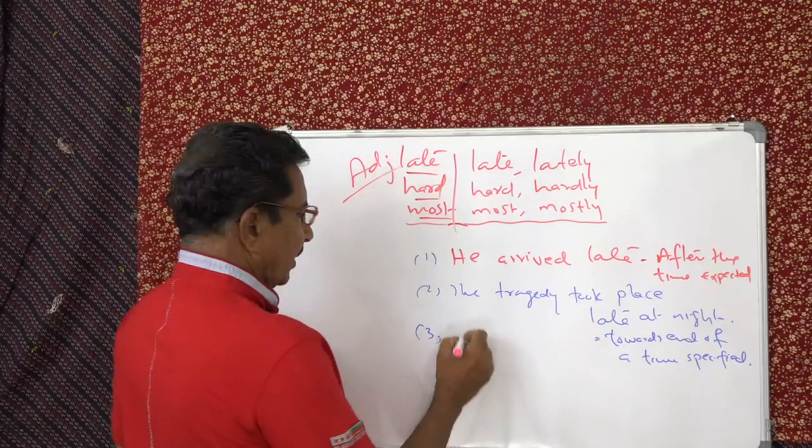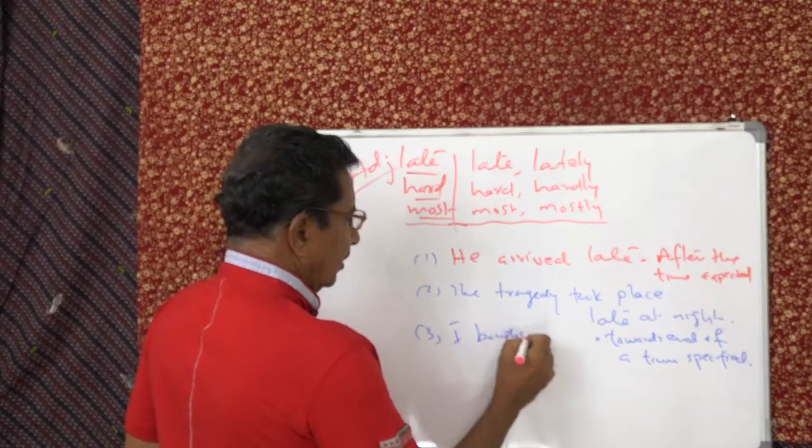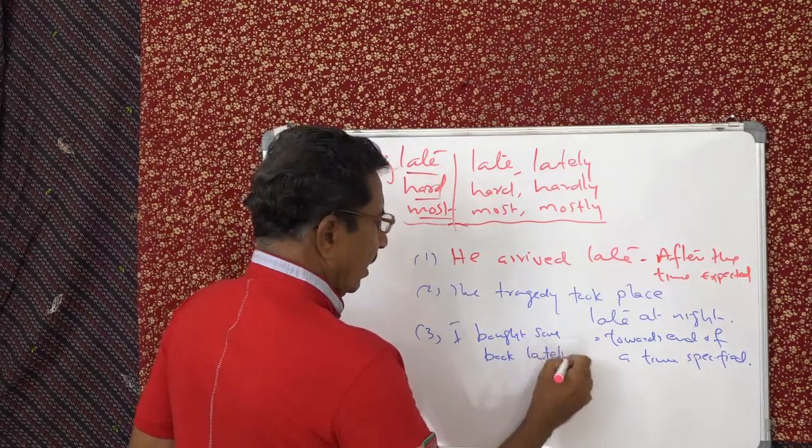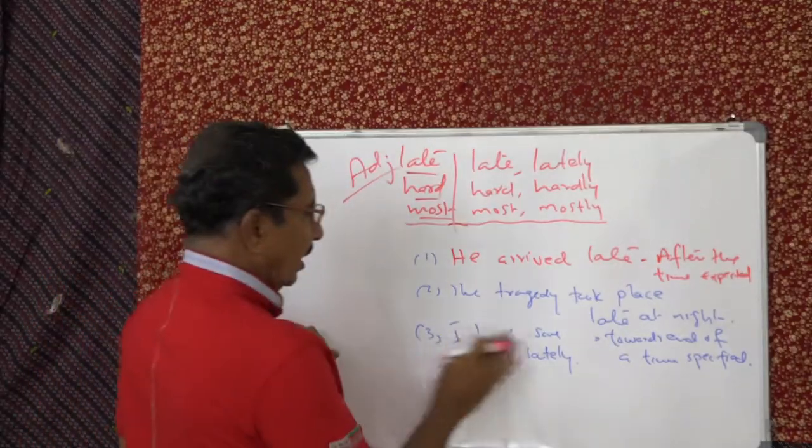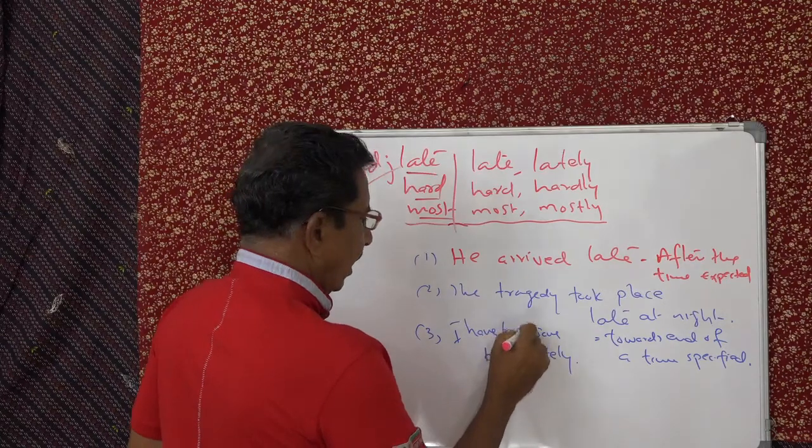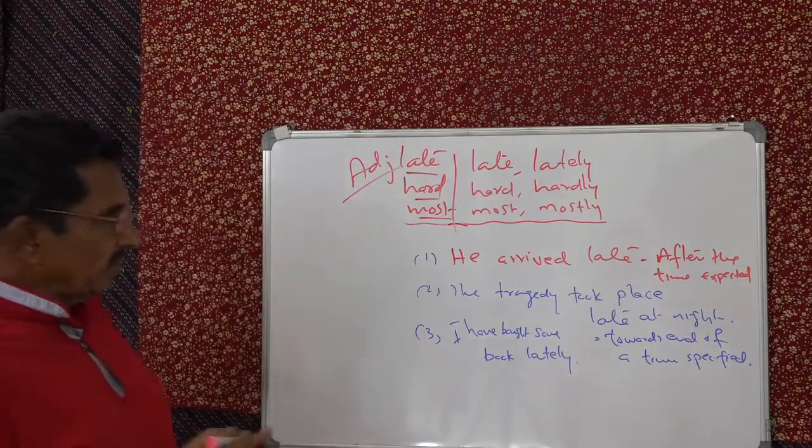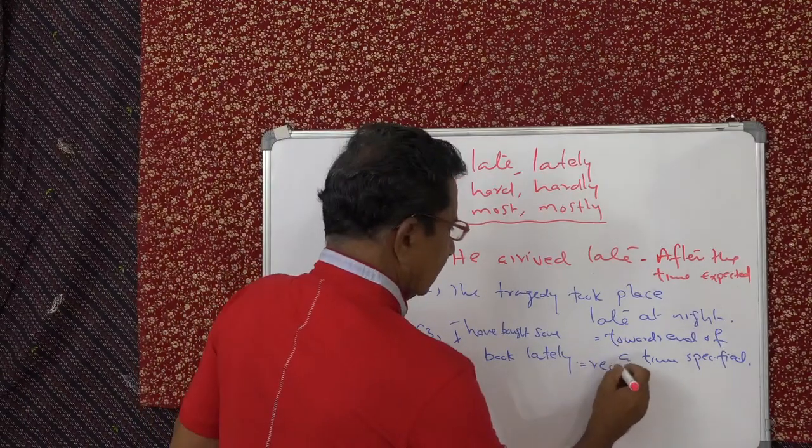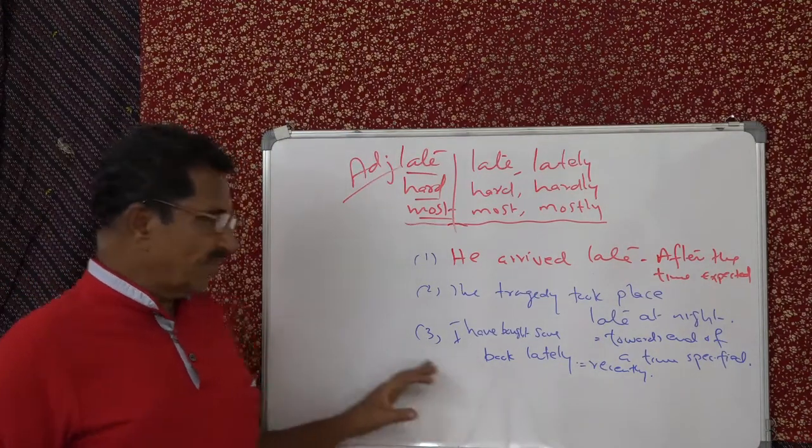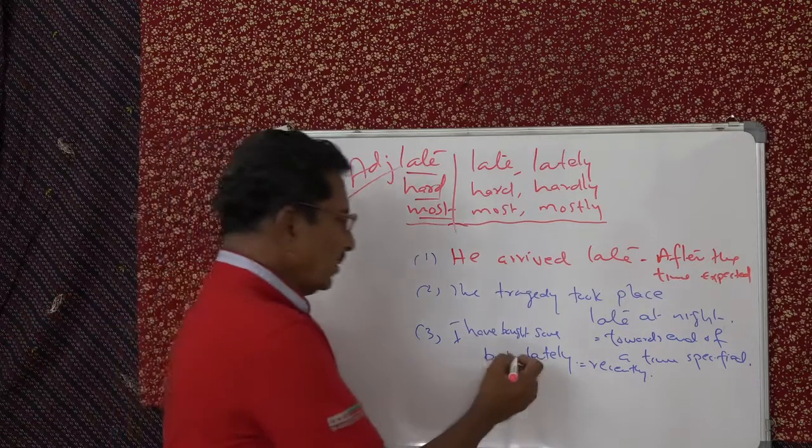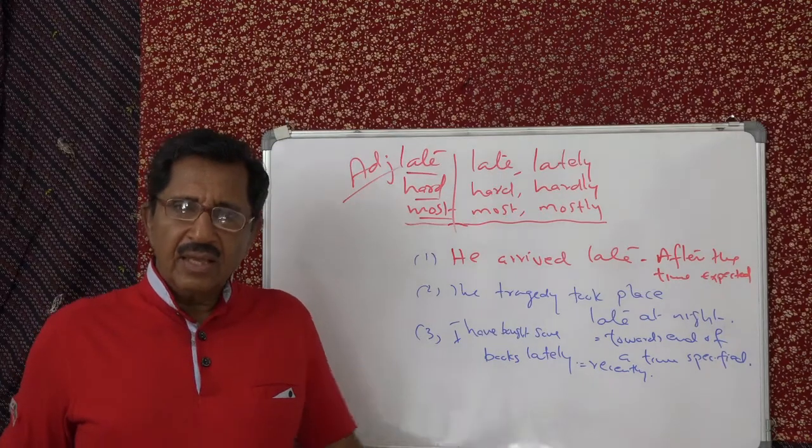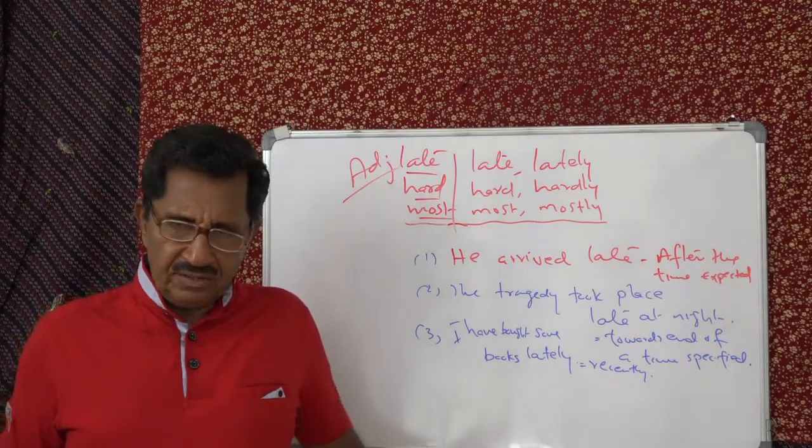And the next example is lately. I bought some books lately. I have now, sorry, I have bought some books lately. That means recently. And it is used only with the perfect tense. That's why I said sorry. I have bought some books lately.